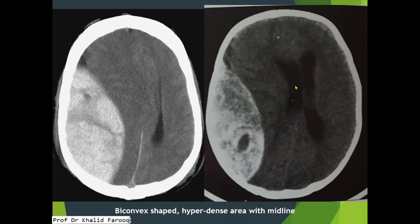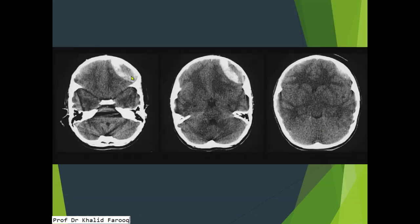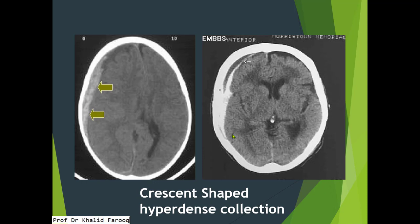Here the extradural hematoma is appreciated as a high density lesion with mass effect on the posterior portion of the right lateral ventricle. There is midline shift and subtle dilatation of part of the left lateral ventricle. This is another example of extradural hematoma over the left frontal-parietal lobe anteriorly.